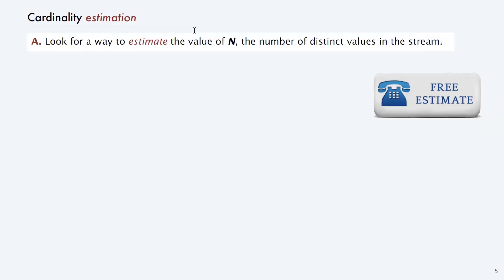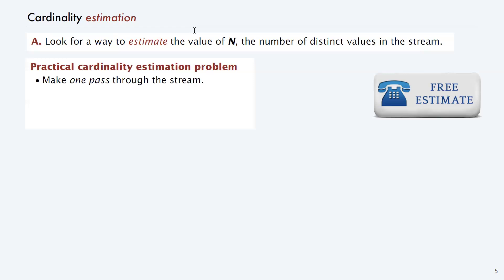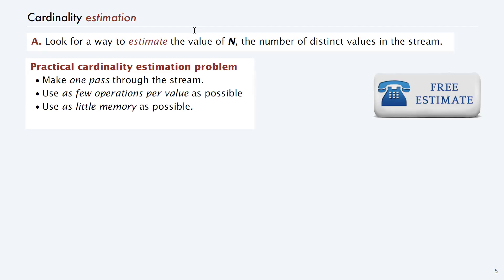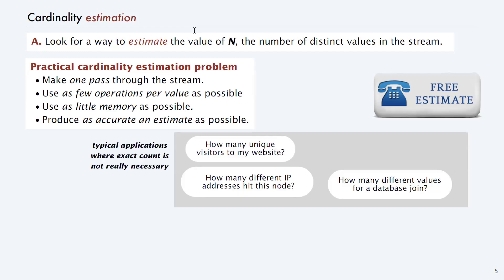Instead, what we want is to estimate - to find a way to have an estimate of the number of distinct values in the stream. There are plenty of applications for which that's very useful. The practical cardinality estimation problem: you make one pass through the stream, you only get to touch the item for a tiny amount of time. This is implemented in machine language on network switches, for example. You want to use as little memory as possible, and you want to have as accurate an estimate as possible.